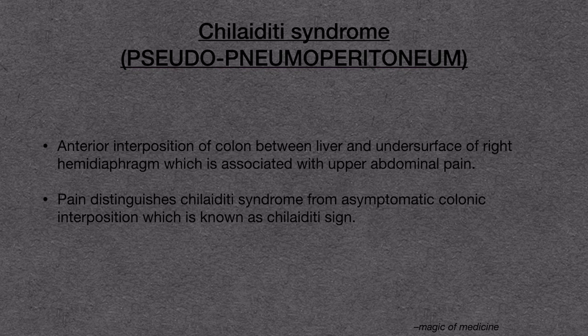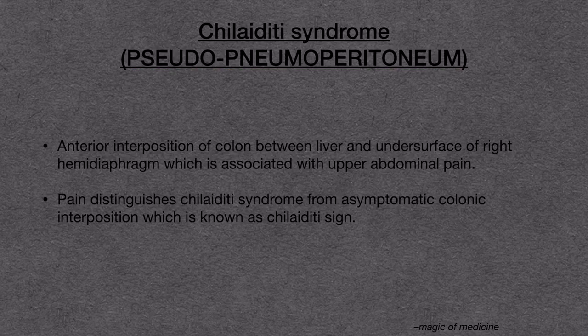Coming to the definition: Chilaiditi is the anterior interposition of colon between the liver and the undersurface of the right hemidiaphragm, which is associated with upper abdominal pain. We are calling it a syndrome only if it is associated with pain. If this condition is painless, then it is called Chilaiditi sign — that is, if the colon is present between liver and diaphragm but is not causing any pain or symptom, then it is called Chilaiditi sign.